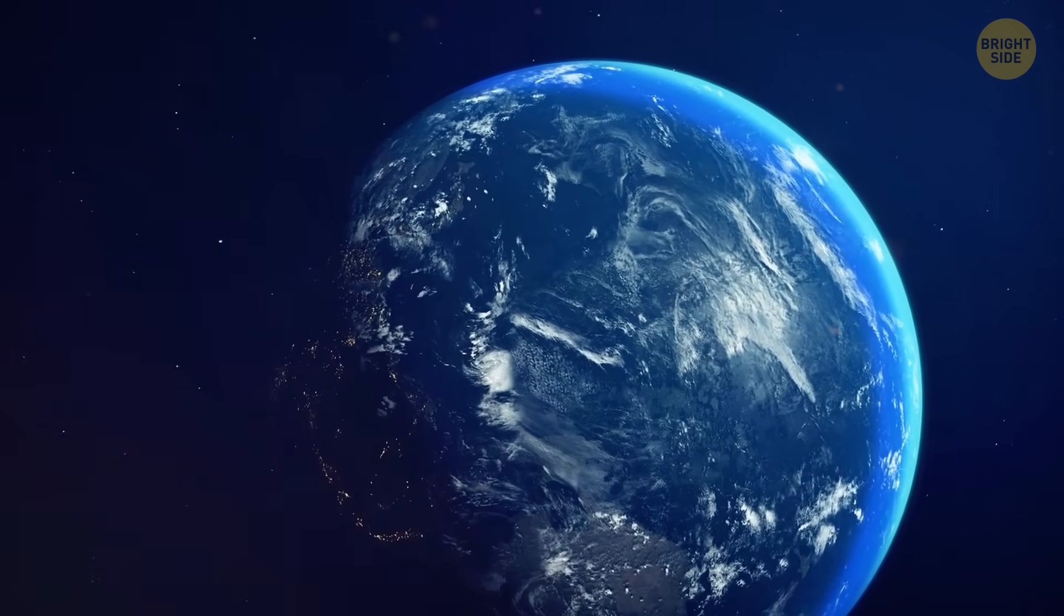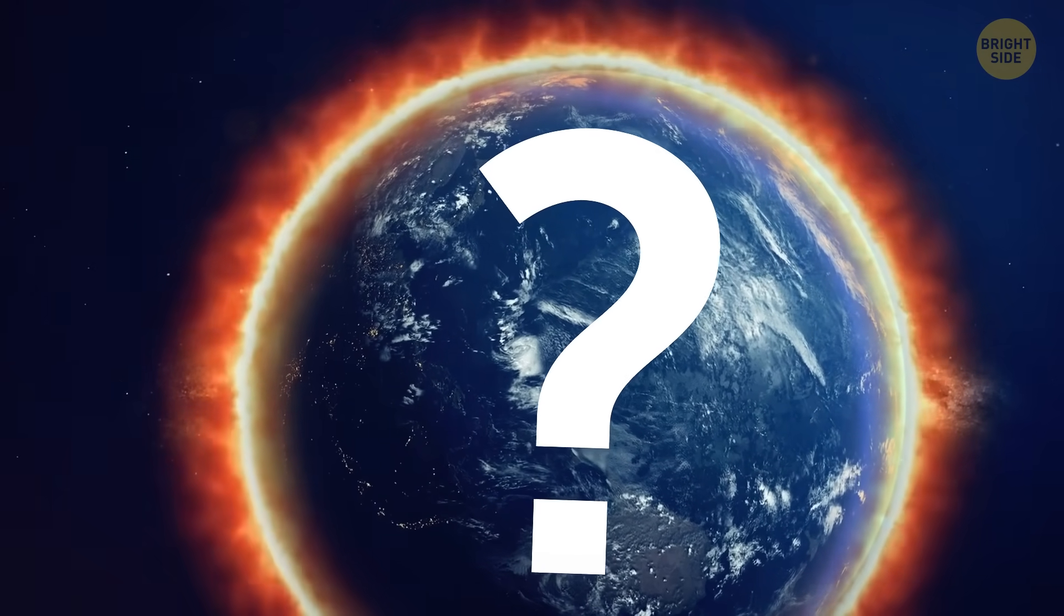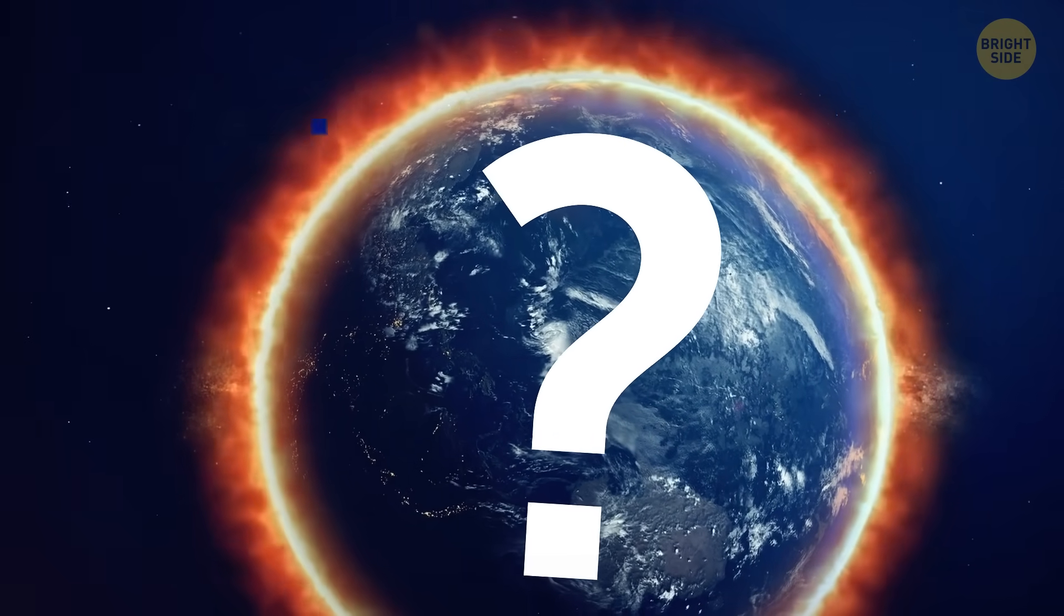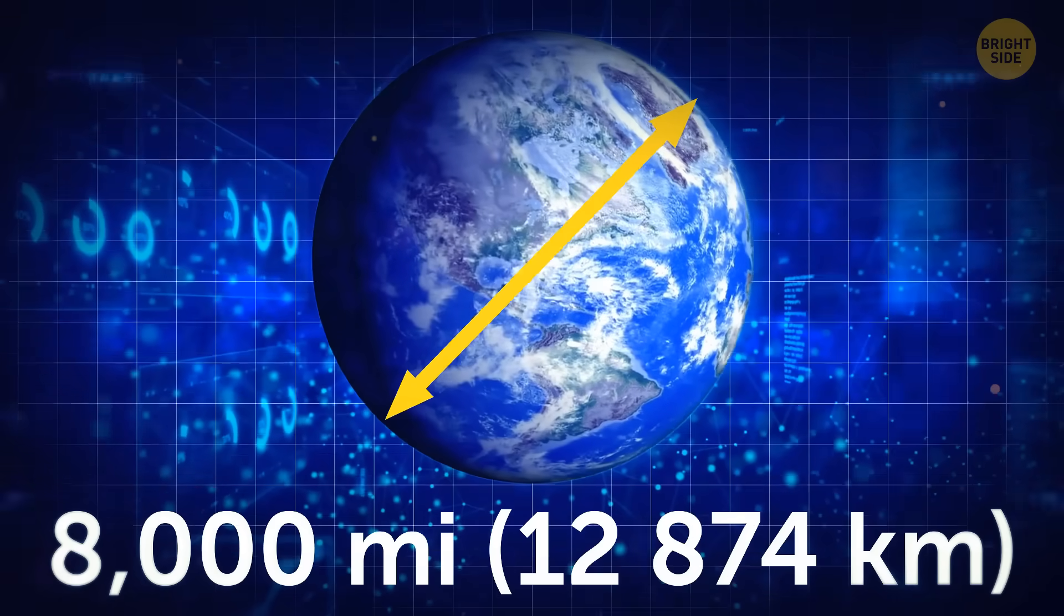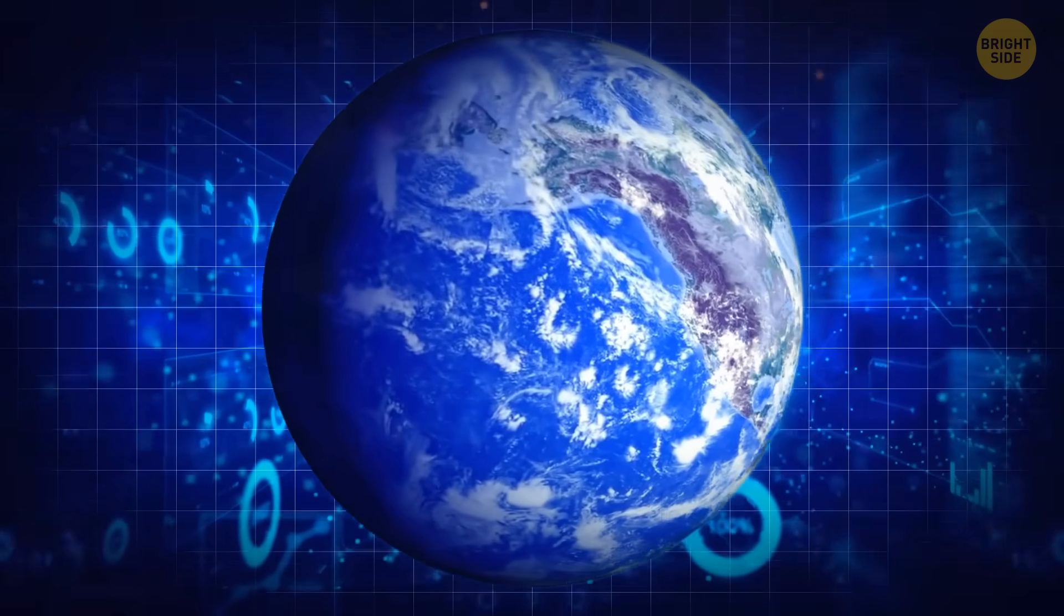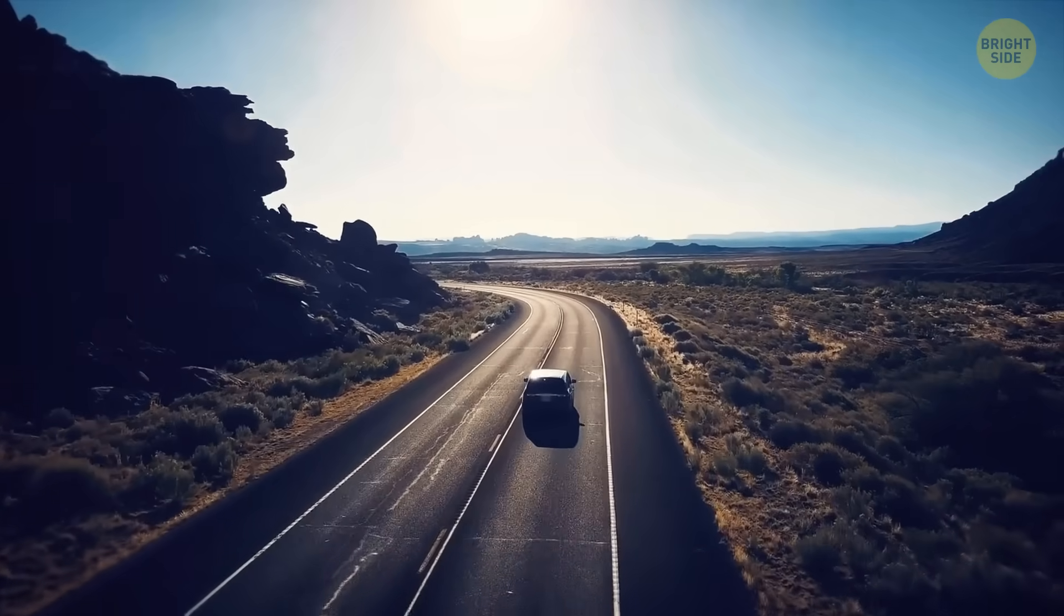What would happen to us and our planet if it became as big as the sun? The diameter of the Earth is 8,000 miles. Crossing it is like driving back and forth across the USA three times. That doesn't sound like much, right?